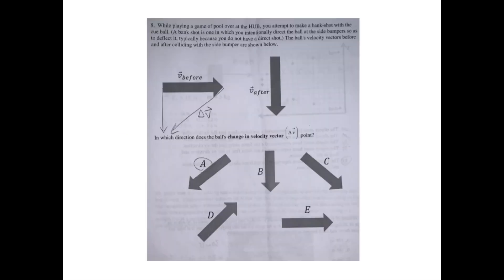Take a moment to read question 8. For this problem, you want to do tail-to-tip vector addition. So if you add the vector before and the vector after, you get the change in velocity vector. As you can see, I've drawn it in, and the answer corresponds with the change in velocity vector A, which is our answer.